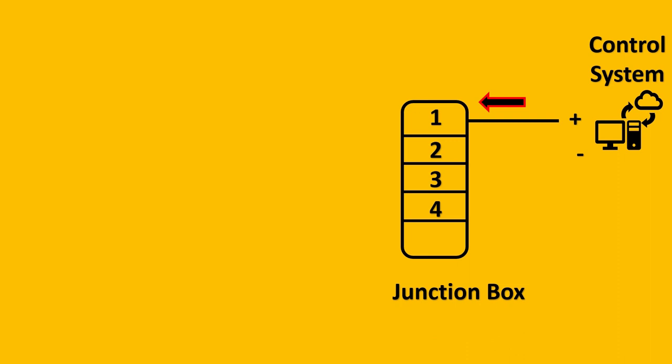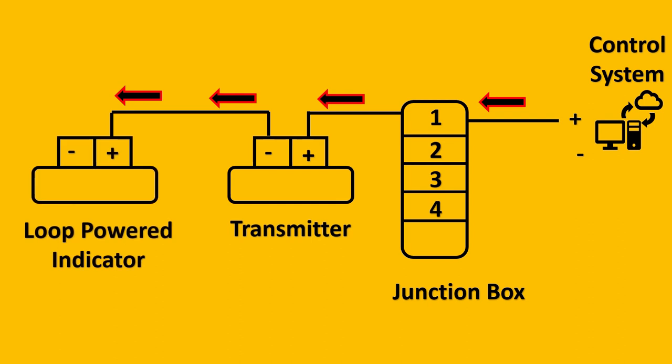It goes from your multi-pair and the junction box that we had seen initially, and from your junction box it is now going to go to your transmitter, to the positive end of the transmitter. Very clear, right? The negative will now not go to control system.